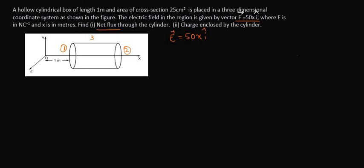Let us calculate the electric flux through the third surface first. The electric field is in the x direction, and the area vector of the curved surface is normal to it — that is, in the y direction. So the angle theta between E and the area vector is 90 degrees. Therefore, the flux through the curved surface is zero.